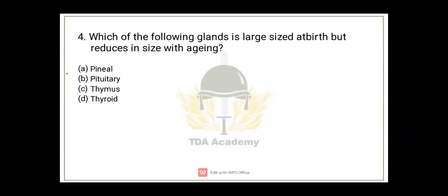Question 4: which one of the following glands is large-sized at birth but reduces in size with aging? Option A: pineal. B: pituitary. C: thymus. D: thyroid. This has also been covered in our classes. The correct option is thymus, option C. What happens in this gland? At the time of birth, in a person, the size is most important and it's responsible for immunity. T lymphocytes are matured in your thymus.